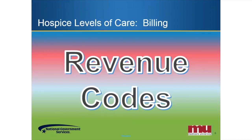There are four levels of service that may be billed by a hospice provider. Before we discuss each of these levels of service, let's first discuss what a revenue code is. The National Uniform Billing Committee defines a revenue code as a code that identifies specific accommodations, ancillary service, or unique billing calculations or arrangements. In short, the revenue code notifies a billing system of the service being billed by using a specific four-digit code.